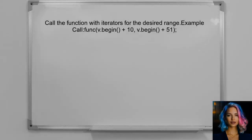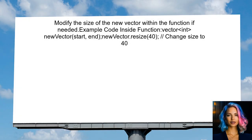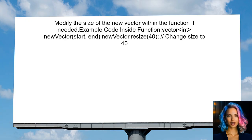Next, call this function by providing the iterators for the desired range. For example, to pass elements from index 10 to 50, you can use the begin method and the plus operator. Finally, you can modify the size of the new vector within the function if needed. However, remember that the original vector remains unchanged.